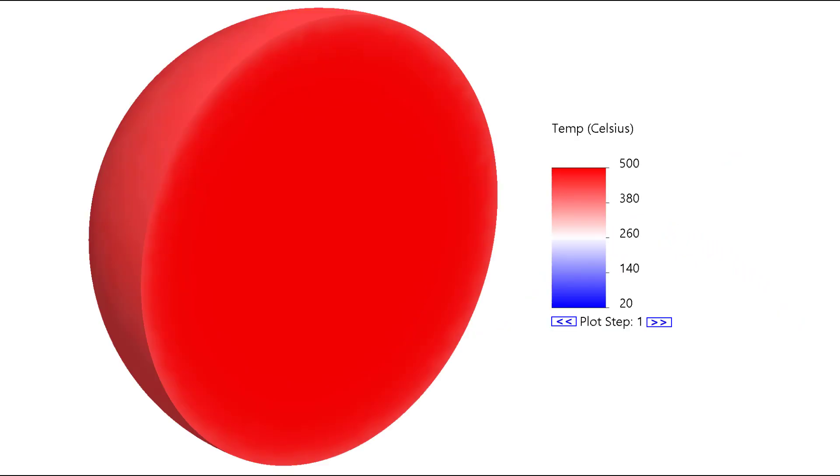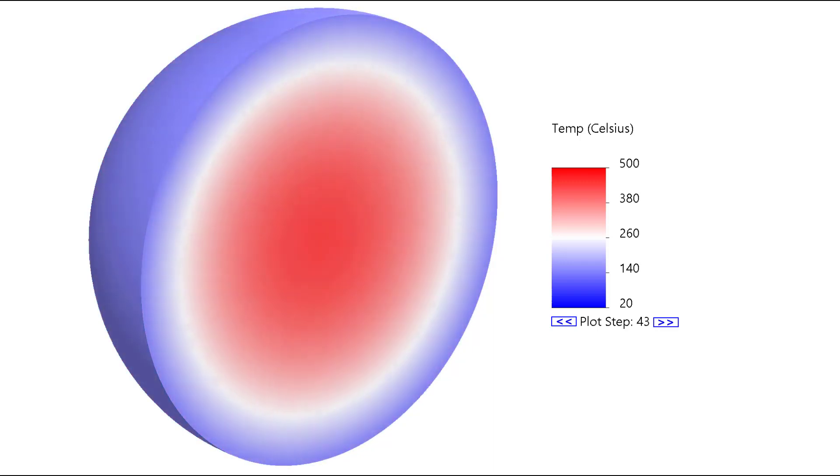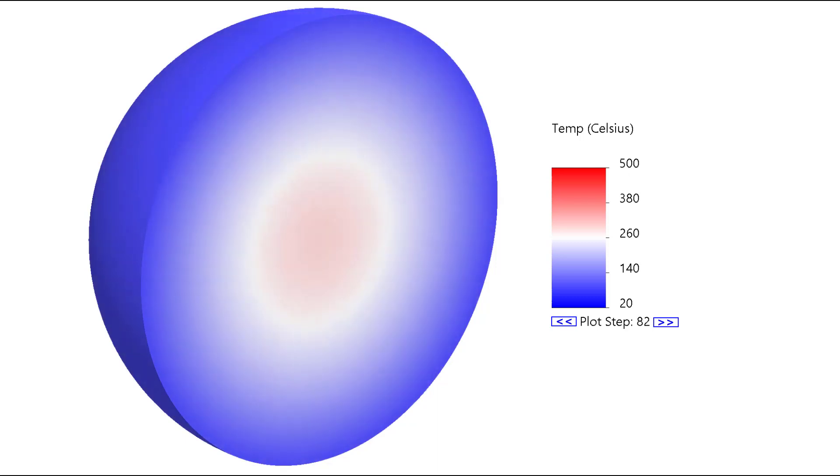So now you're looking at an FEA simulation of the same problem, where the Biot number is equal to four. Each frame in this simulation represents one minute, so it's occurring over two hours. We again see the rapid decrease in temperature of the exterior of the sphere and a slow decrease in temperature of the interior.